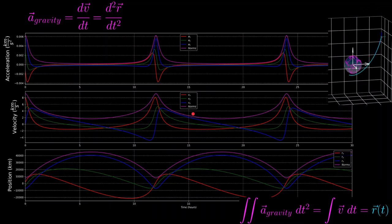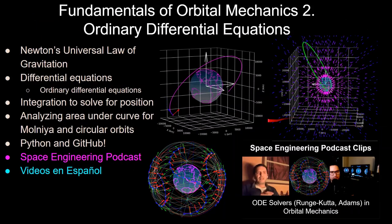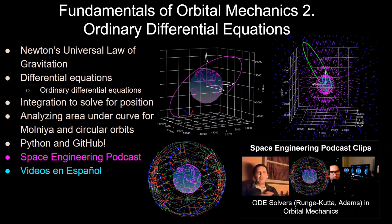If you stick around to the end, I'm going to show all the Python that I use for the acceleration, velocity, and position plots shown on screen, and show where they are on the GitHub repository for this channel. This is the second video in the series of Fundamentals of Orbital Mechanics, covering ordinary differential equations and how they apply in orbital mechanics. The Space Engineering Podcast is also on this channel, including a clip discussing different ODE solvers and why JPL uses an Adam solver for their orbital mechanics numerical integration. It's also available on Spotify, Google Podcasts, and Simplecasts.